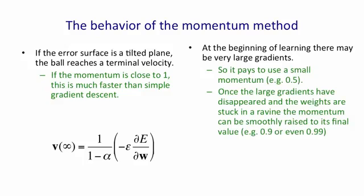So it pays at the beginning of learning to have a small momentum. It's probably better to have 0.5 than 0, because 0.5 will average out some sloshes in obvious ravines.